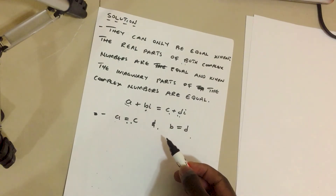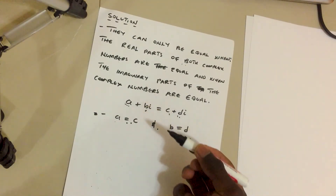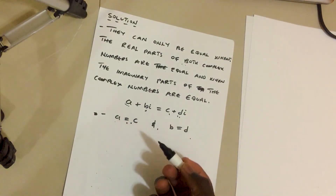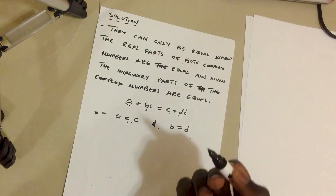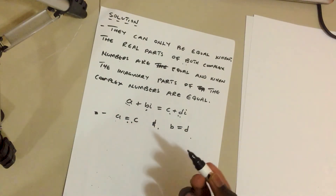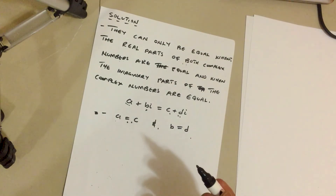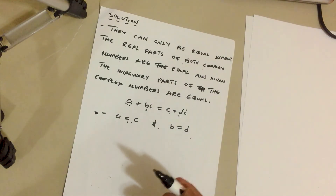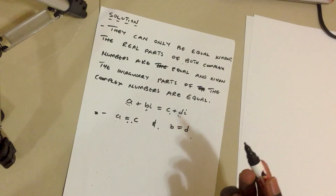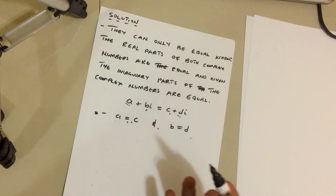We've come to the end of part two of complex numbers. In the next video, we're going to be looking at the Argand diagram, the conjugate, and many other things. Thank you very much for tuning in and see you in the next video.